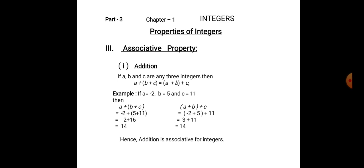First, associative property of integers under addition. If a, b and c are any three integers, then a plus (b plus c) is equal to (a plus b) plus c. Let us prove it with an example. If a is equal to minus 2, b is equal to 5 and c is equal to 11,